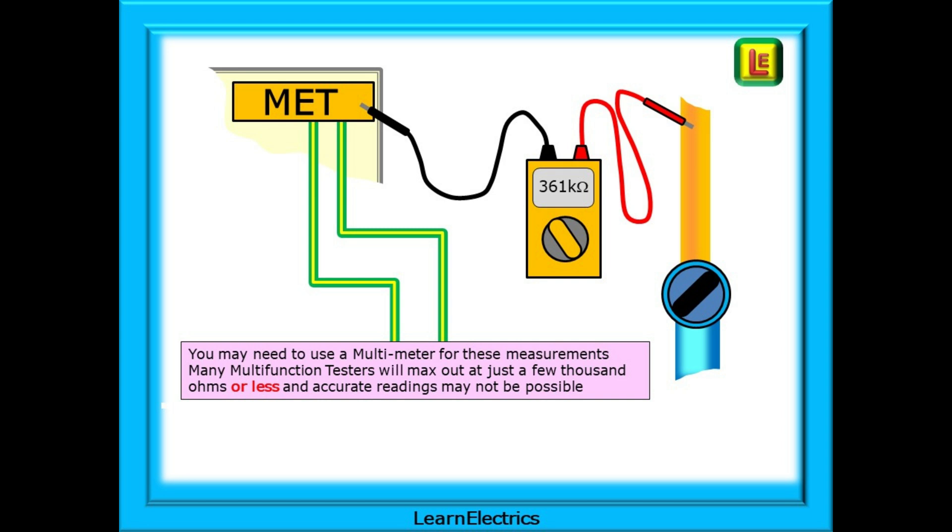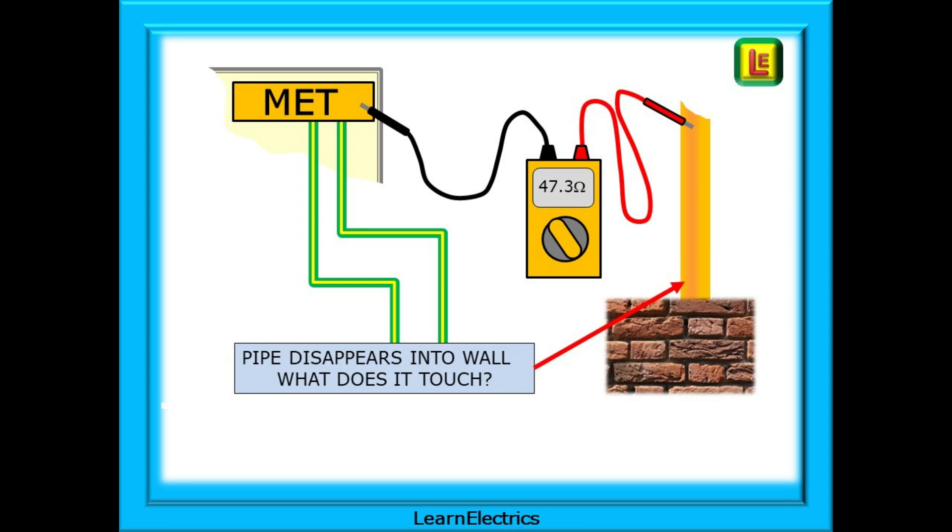Shown here is a copper water pipe inside the house that is supplied by a plastic service pipe. Ideally, we should visually inspect the whole length of the pipe, but what happens when it disappears from view inside a wall? We must measure the resistance value.